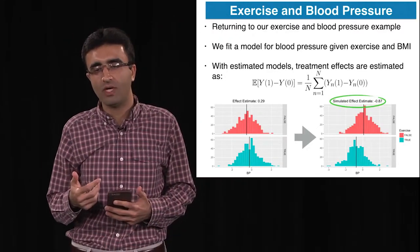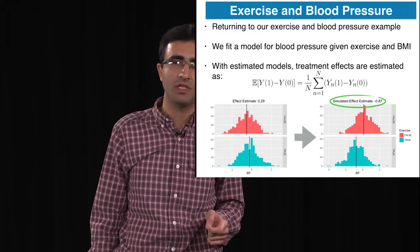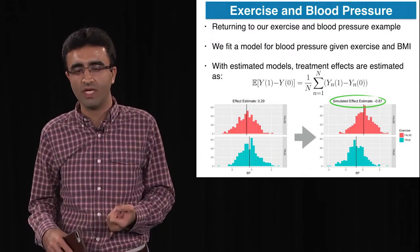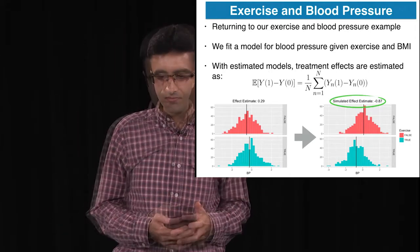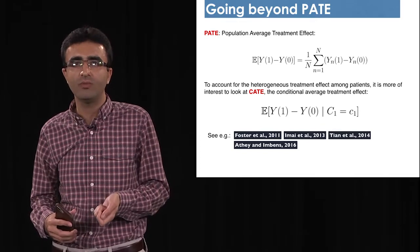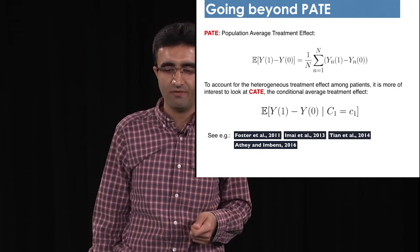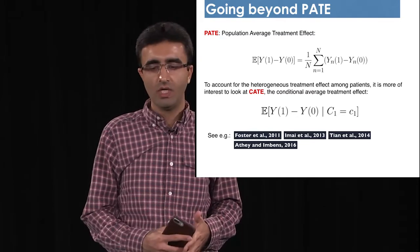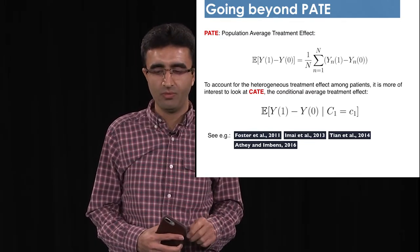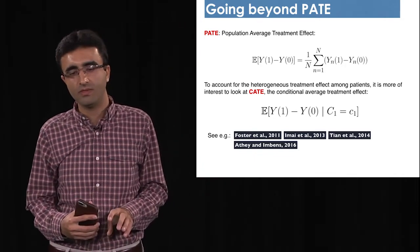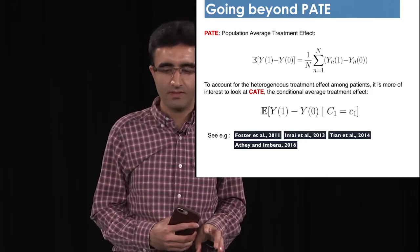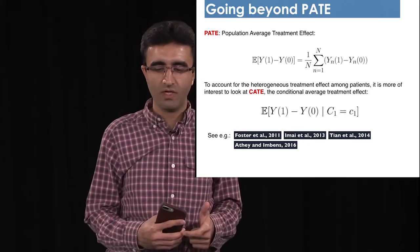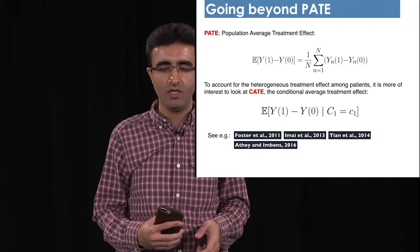Going back to our exercise example, we can learn a model for the potential outcome of blood pressure as a function of BMI and exercise, look at the difference of potential outcomes for each individual, and average over the population. This is estimating the population average treatment effect, or PATE. We could also estimate causal effects on subgroups — if there is a subgroup with different treatment effects characterized by some covariates, we can compute the conditional average treatment effect for that subpopulation.